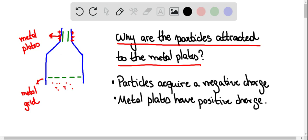And we know that charges with different signs attract each other. So the negative charges will be attracted by the positive charges on the metal plate.